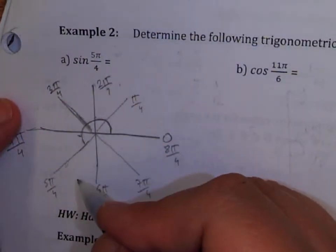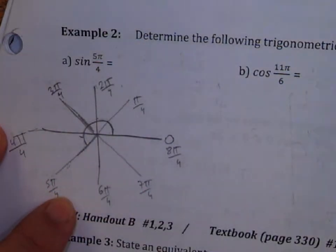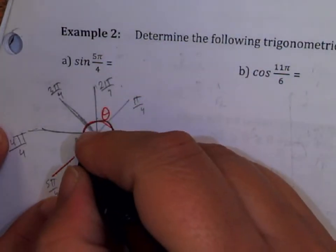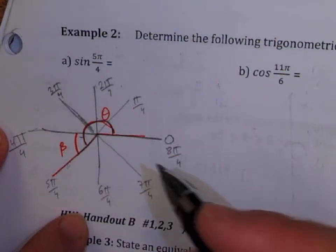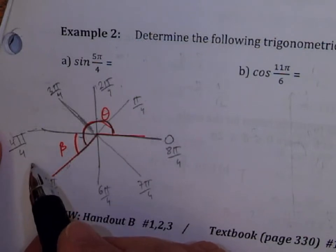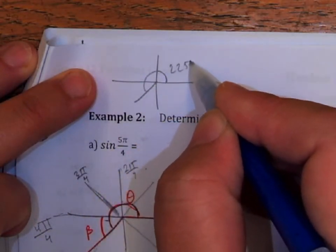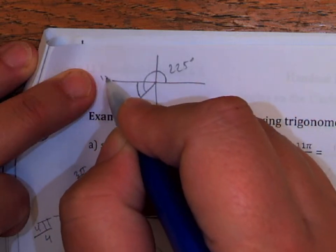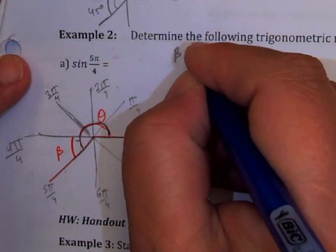Step two: find the related acute angle. The terminal arm is at 5π/4. Beta is the angle between the terminal arm and the closest x-axis. 5π/4 minus 4π/4 gives a difference of π/4. If you use degrees: 225 minus 180 equals 45 degrees. So beta equals π/4.